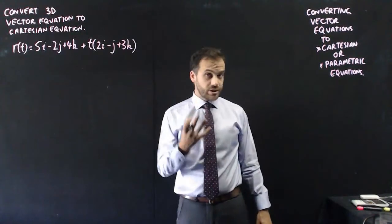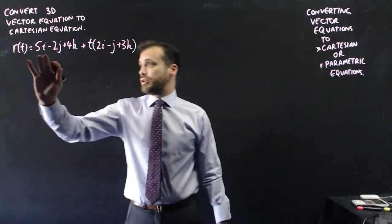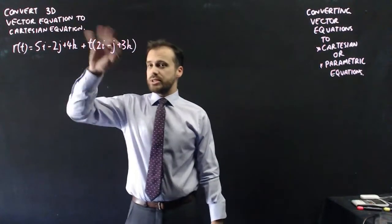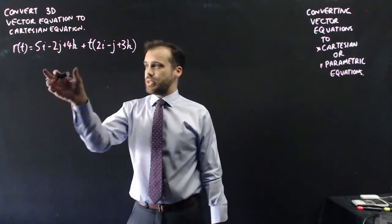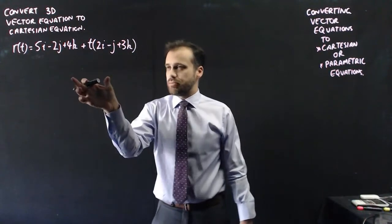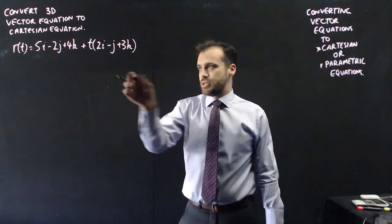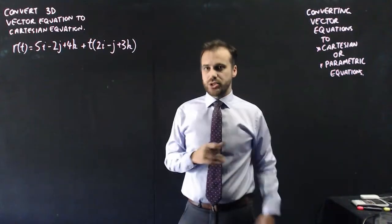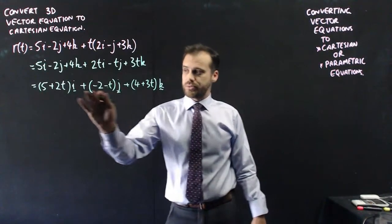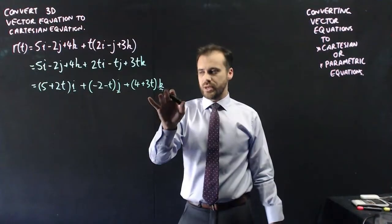Alright, on to 3D. So the process is identical here. I've got a vector equation in three dimensions. I need to expand this and simplify, so I have i components, j components, and k components. So I'm going to expand those brackets, and then group some terms. Expanded brackets, and now grouped into my i, j, and k components.